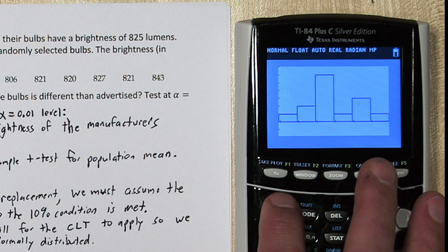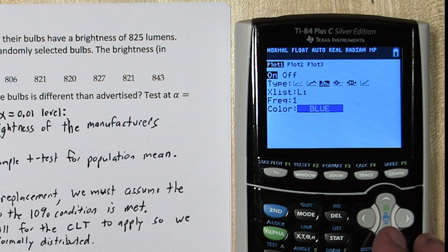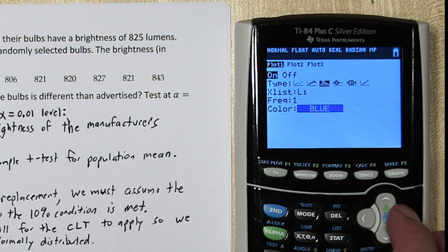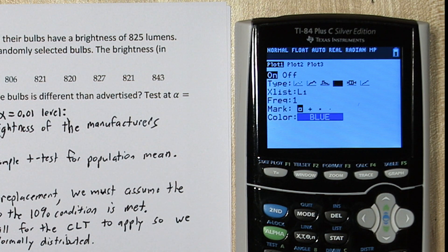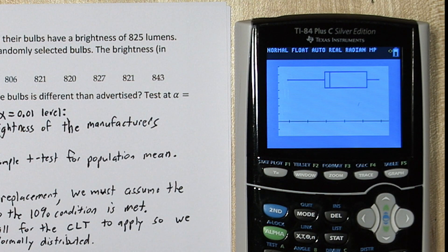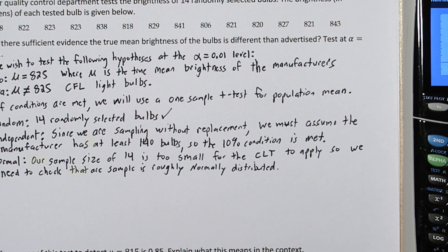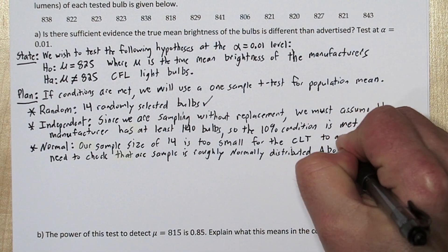Let's check for outliers. Press 2nd and y equals, press ENTER again, and go over to modified box plot. That's this one here. Now if we press zoom and then 9 again, since I don't see any symbols like asterisk or small boxes there, there's no outliers in our data. So between it looking unimodal and roughly symmetric and having no outliers, I'm comfortable saying this is approximately normally distributed. So it's safe to use T procedures.